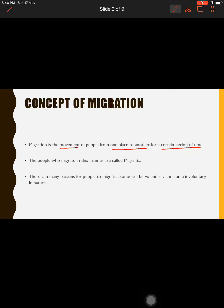The second term is migrants. Who are migrants? The people who migrate from one place to another for a certain period of time are known as migrants. Migration is the movement of people from one place to another, and migrants are the people who make that movement.